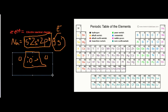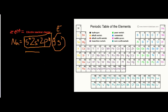To find the effective nuclear charge, you take the atomic number Z and subtract the number of core electrons to get Zeff. For sodium, you count the core electrons which is 10, and the atomic number of sodium is 11, so 11 minus 10 gives a Zeff of positive one.